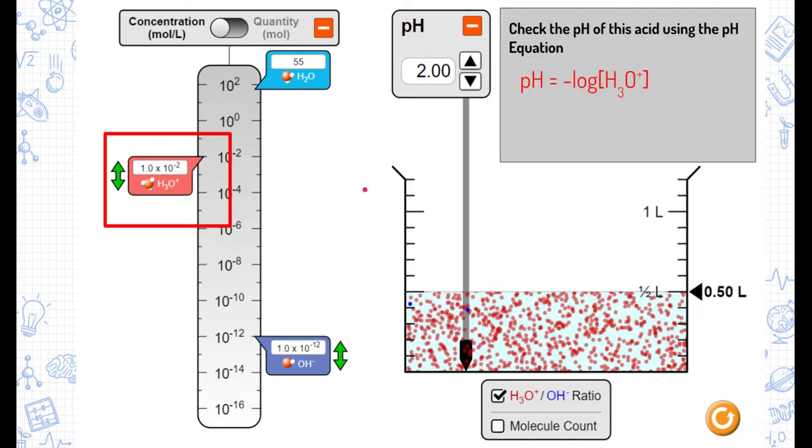So, I know that pH is equal to the negative log of the concentration of hydronium. All I need to do is plug that into my calculator. Negative log and then 1.0 times 10 to the negative 2. That's going to confirm that the pH is actually 2.